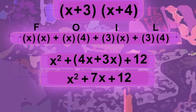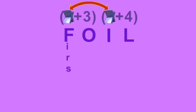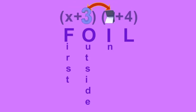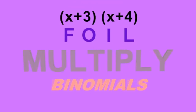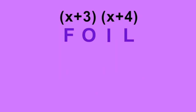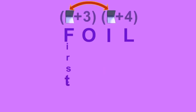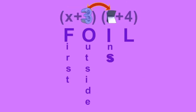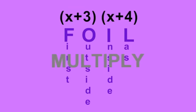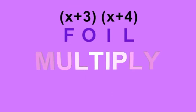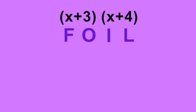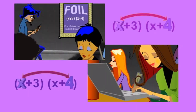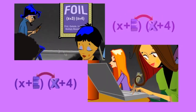First, outside, inside, last — multiply binomials fast. First, outside, inside, last — multiply binomials fast. End Program.